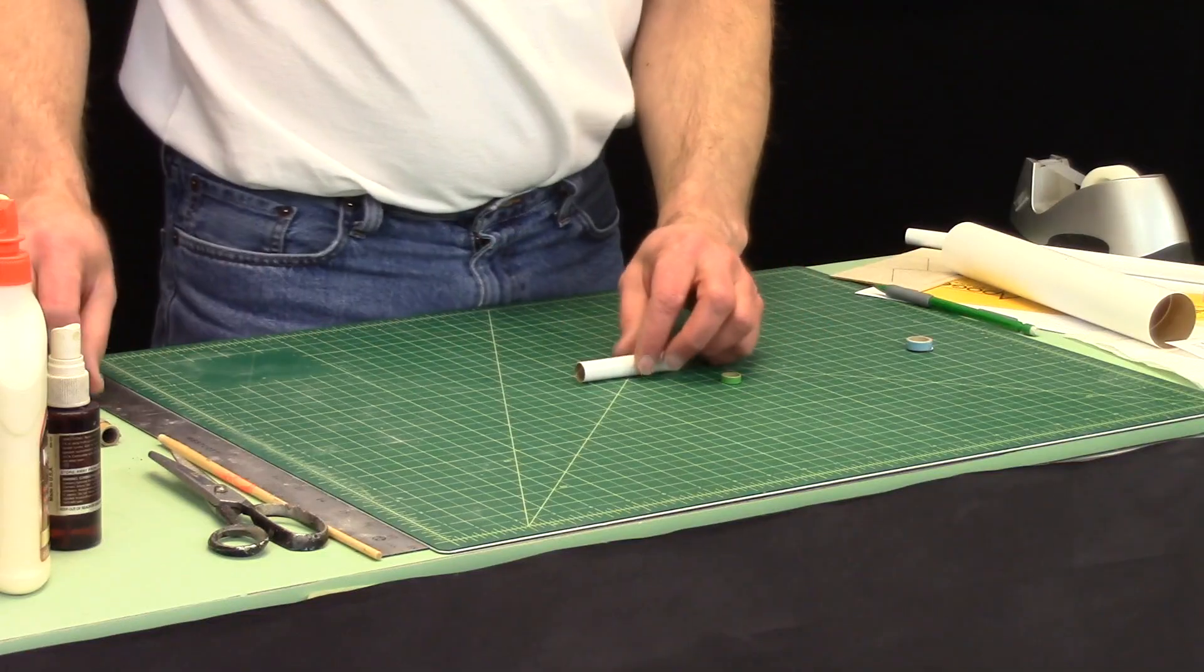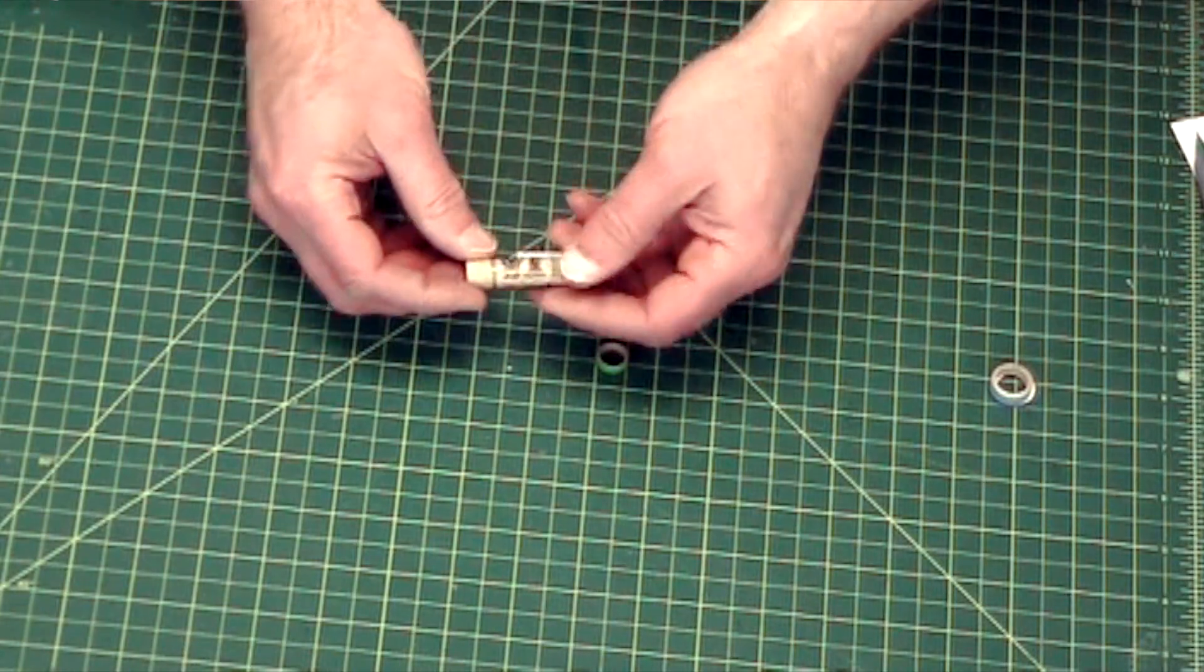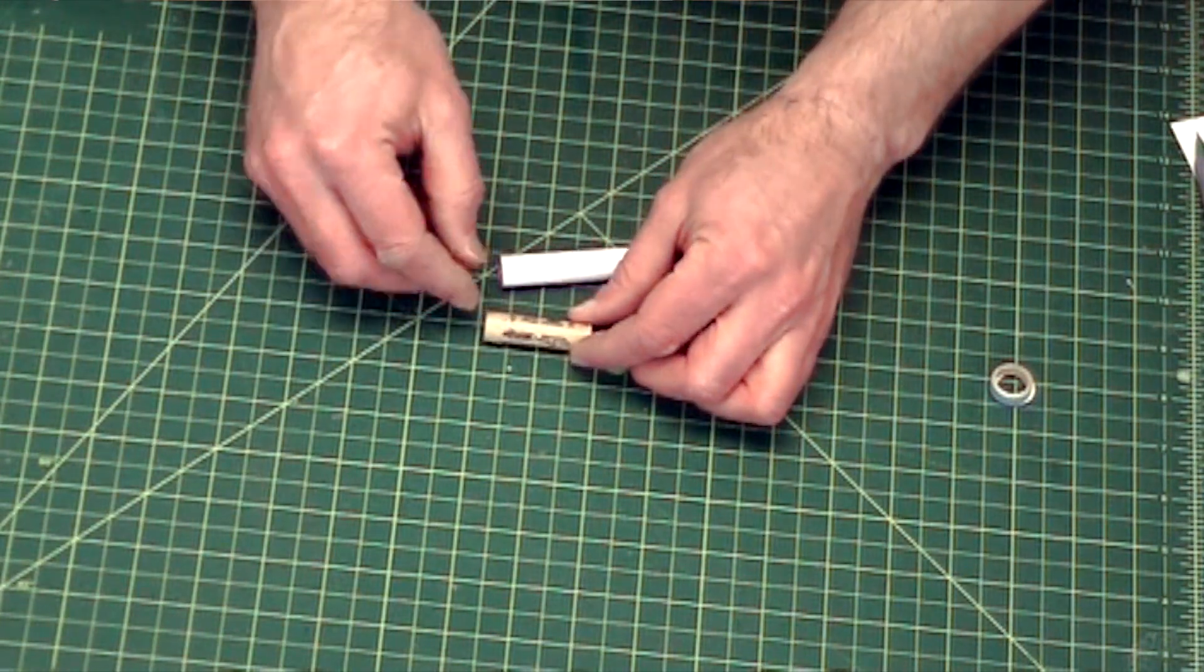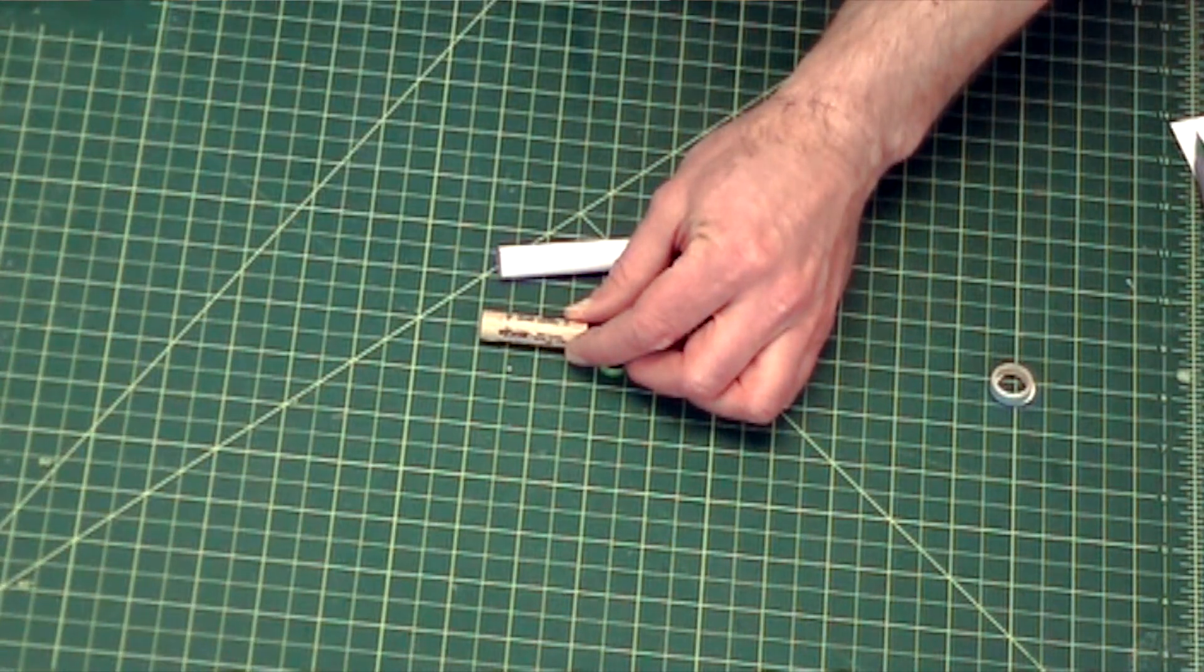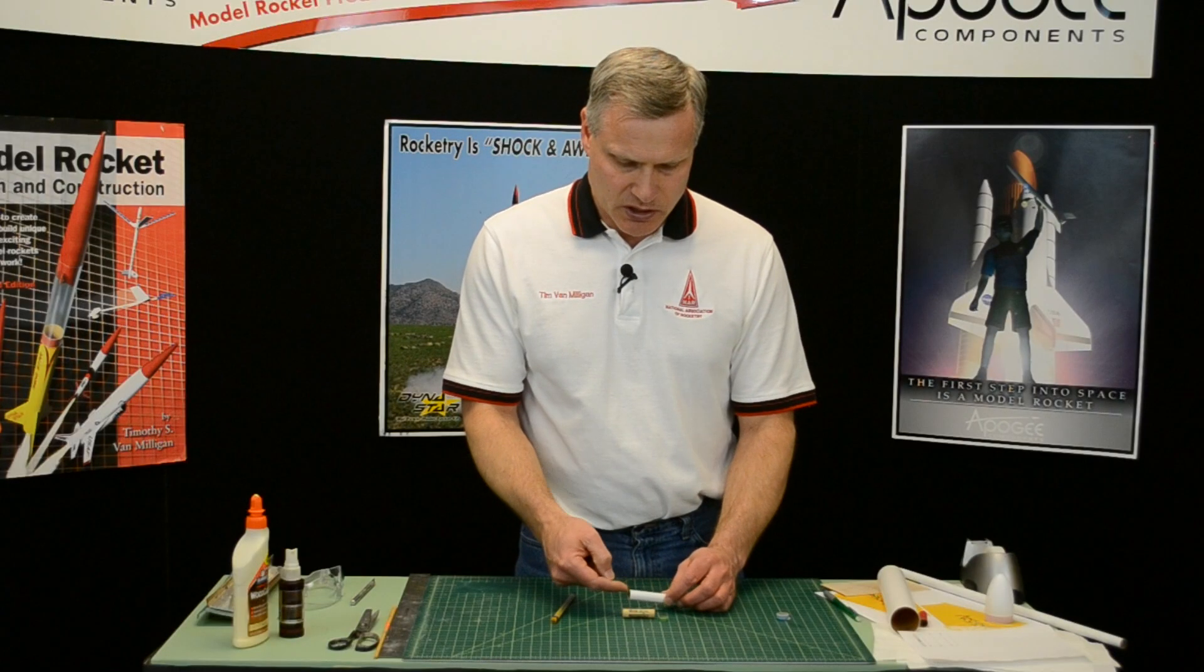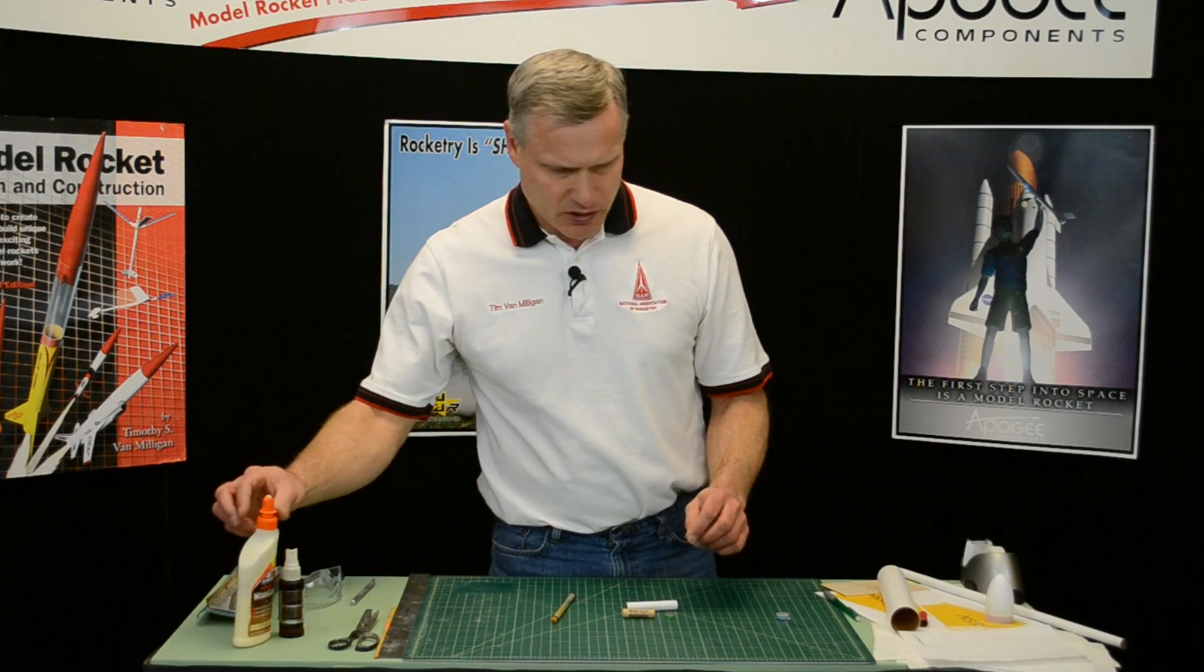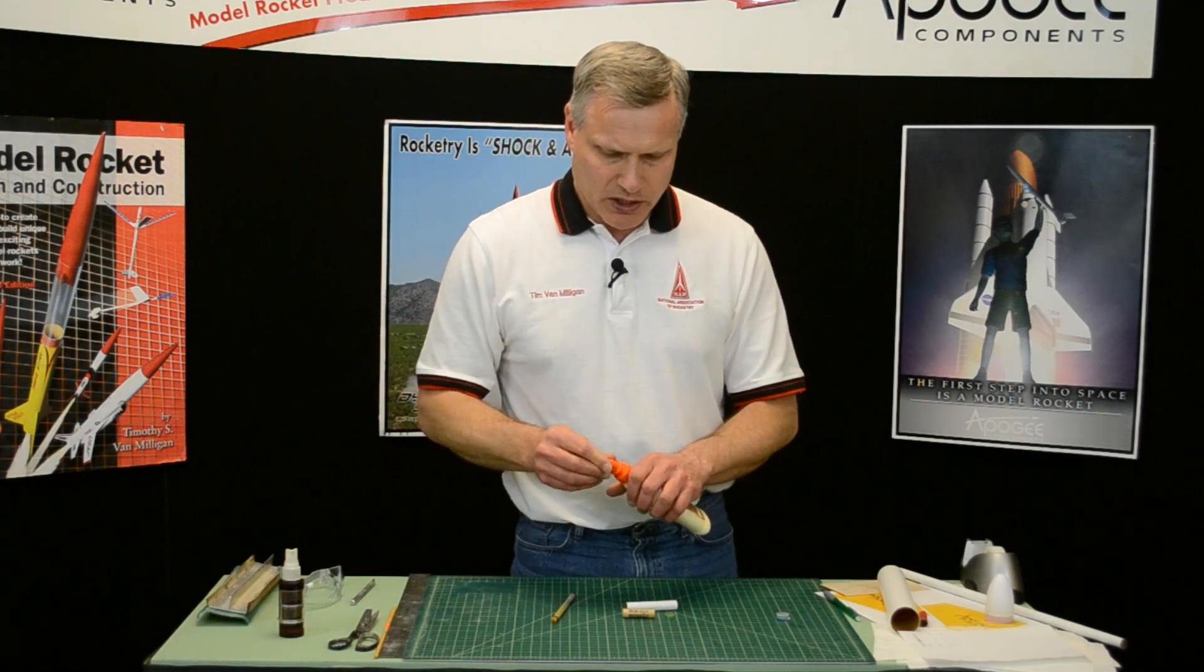So now the engine block gets put in so that if you have a mini engine motor, it sticks out about 3/8 of an inch. On this rocket engine right here, I've already marked it at 3/8 of an inch. So we just need to put some glue inside, put the ring in, and shove the engine block in.